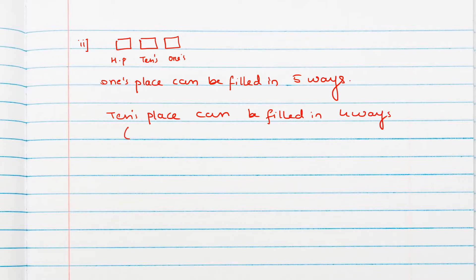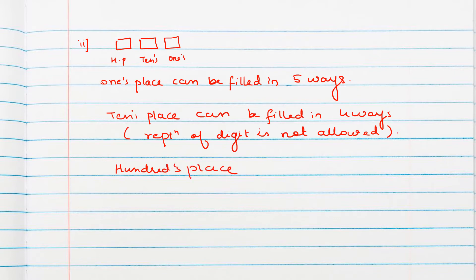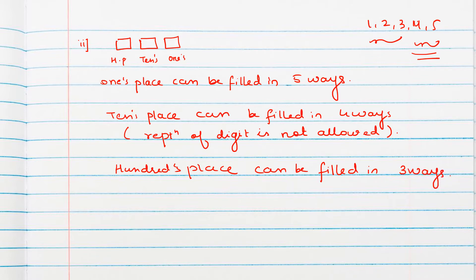Since repetition of the digit is not allowed, we cannot repeat the digit filled at the units place. For the hundreds place, since we have filled both units and tens places, two numbers have already been used from {1,2,3,4,5}, leaving only three choices. So the hundreds place can be filled in three ways. Therefore, the total number of ways when repetition is not allowed is 5×4×3 = 60 ways.